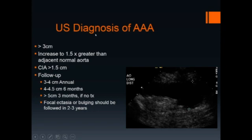A diagnosis of abdominal aortic aneurysm is made when the diameter of the aorta exceeds 3 centimeters, or increases to 1.5 times greater than that of the adjacent normal aorta. A common iliac artery aneurysm is diagnosed when the diameter exceeds 1.5 centimeters. When an aneurysm has been diagnosed, the policy is to follow up a 3 to 4 centimeter aneurysm annually, a 4 to 4.5 centimeter aneurysm every 6 months, and for aneurysms greater than 5 centimeters, these should be followed up every 3 months if no treatment is planned.